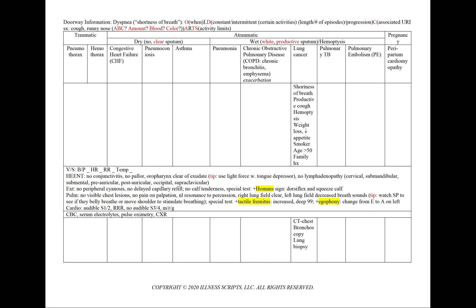In lung cancer, we'll see shortness of breath, a productive cough, and hemoptysis, along with the characteristic cancer findings of weight loss or decrease in appetite. Our patient will also be a smoker greater than 50 years old with a possible family history. We'll order a CT chest, bronchoscopy, and lung biopsy.